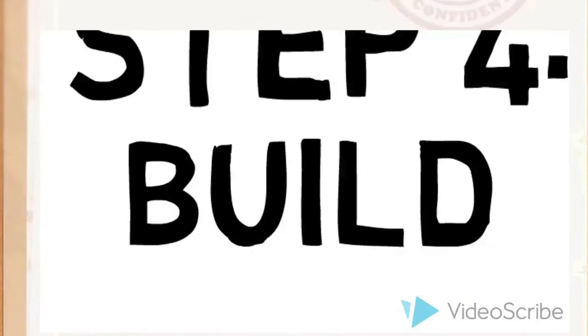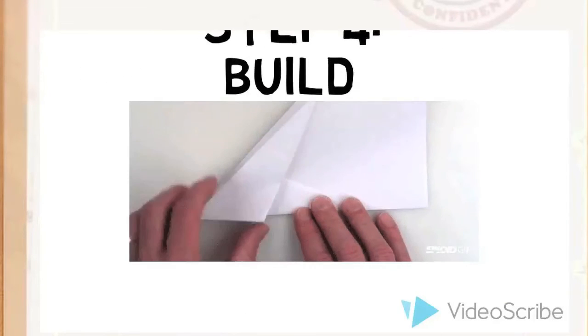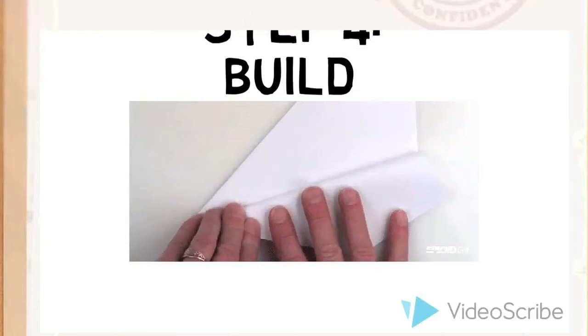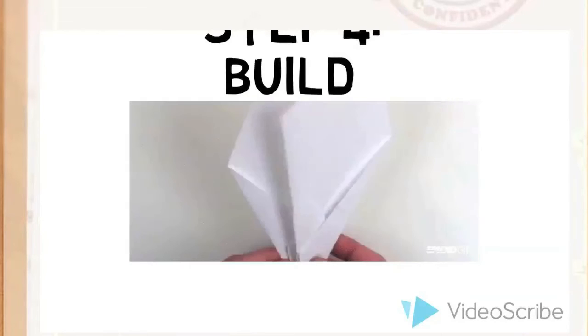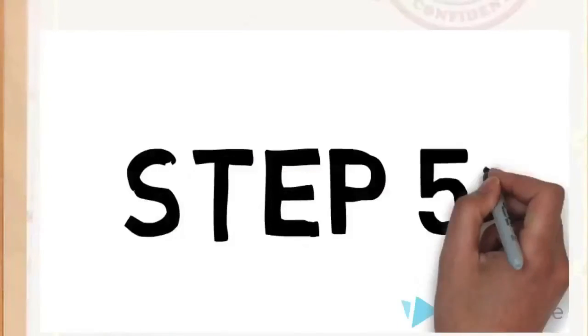Step four, build. As a team, you must work together to build your paper plane. Take turns at folding, gluing, cutting and gathering materials. Check your model against your plan. Is it different? What looks good? What doesn't? Does something need changing? Make notes on your plan to keep track of changes.